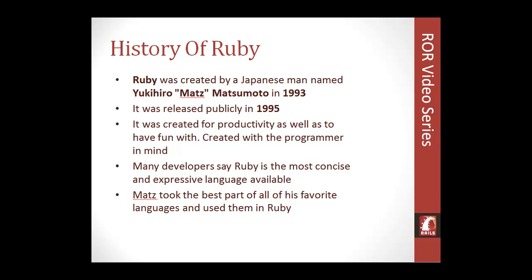What Matz did was take the best aspects of all the languages he was using at the time and kind of meshed them all together and called it Ruby. He took certain elements from Java, a lot of elements from Smalltalk, and different parts from different languages.